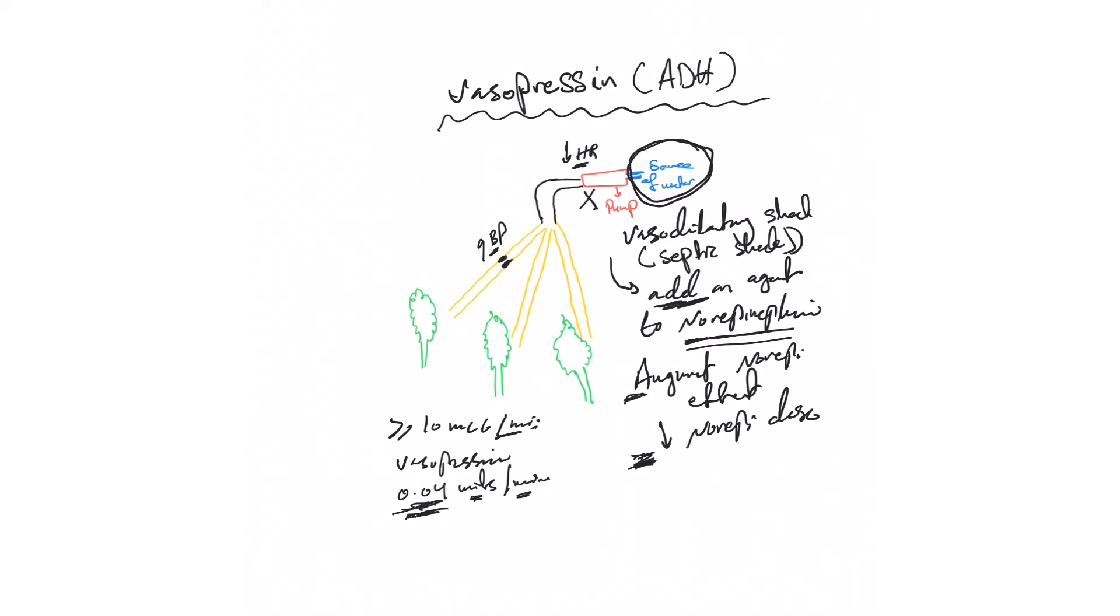Remember, vasopressin needs to be given in a central line, as all other vasopressors, mixed with normal saline. It can cause extravasation and tissue necrosis, so you can give phentolamine as we said in levophed. It can cause hyponatremia because it is an ADH.